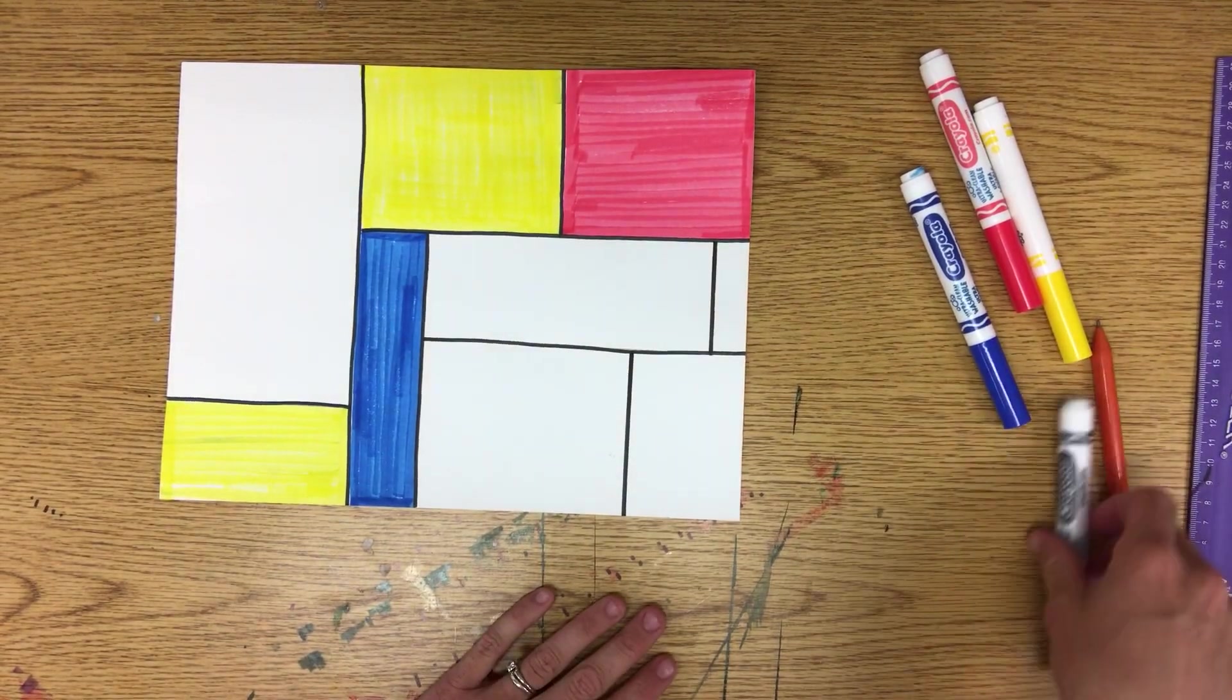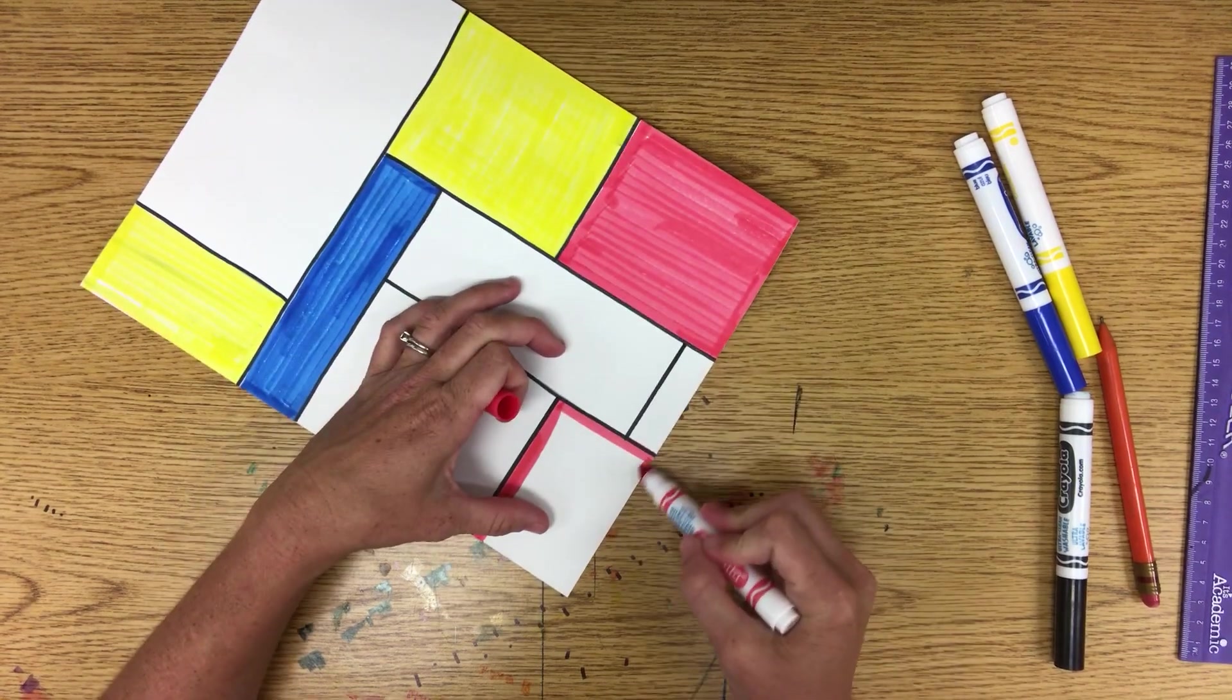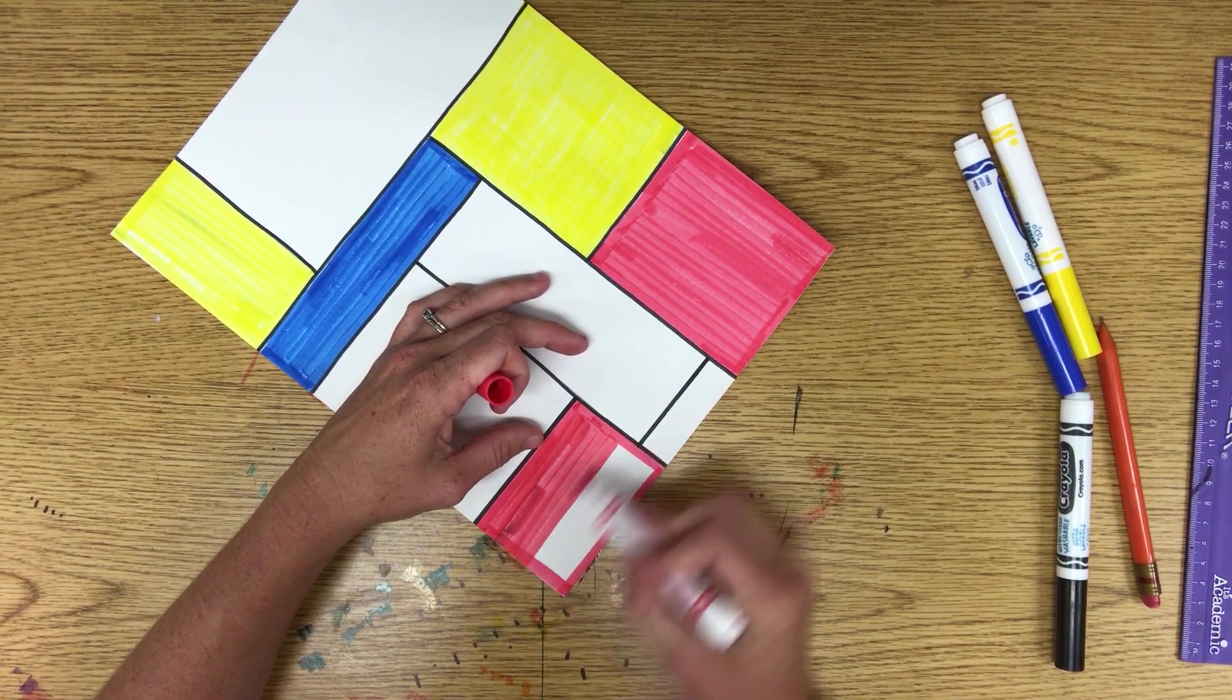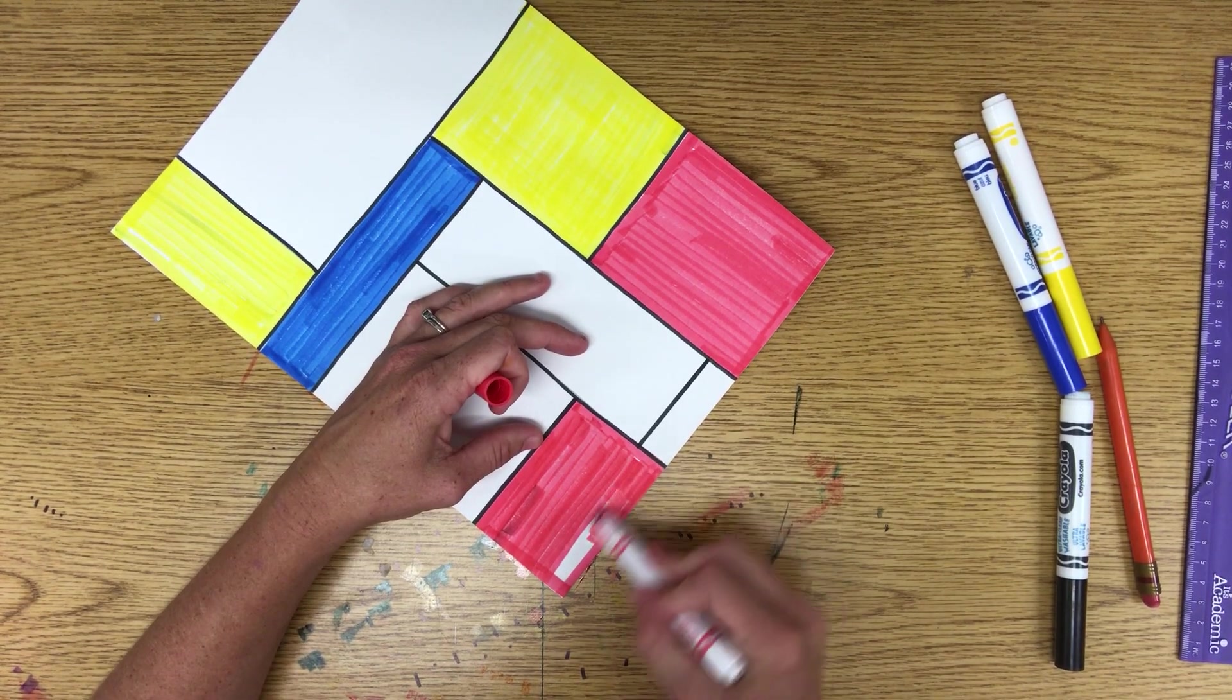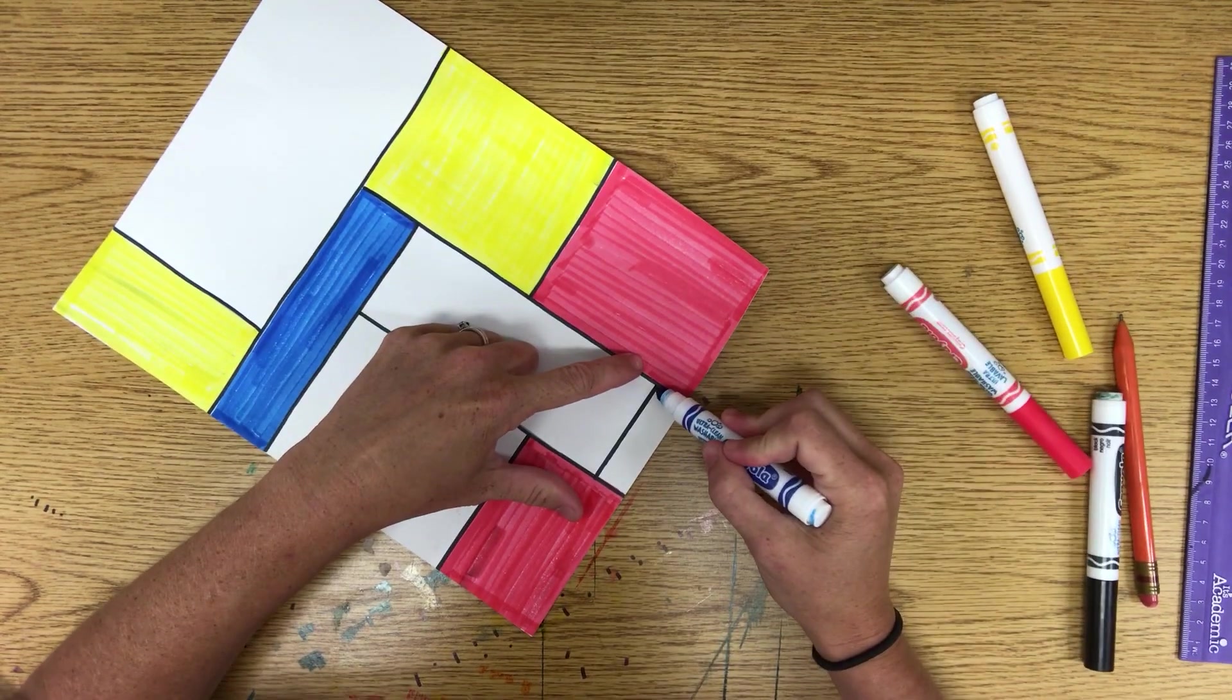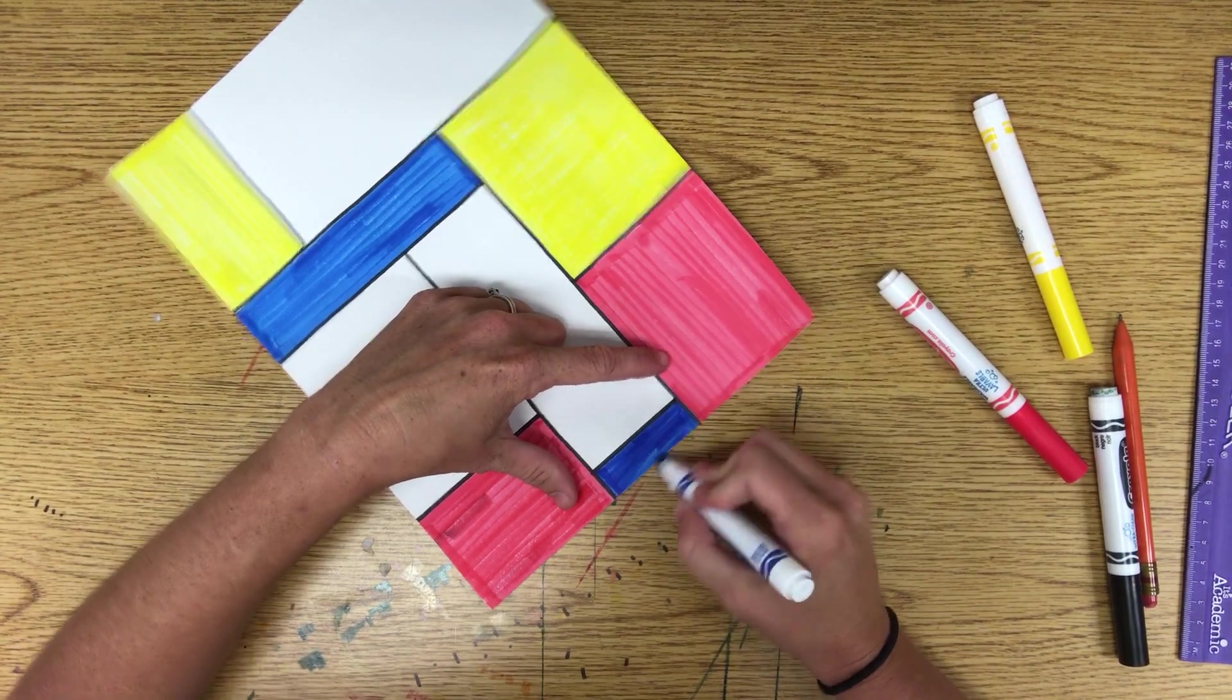All right. So I would like to color in this one red. And lastly, I'm going to make this small one I just created blue.